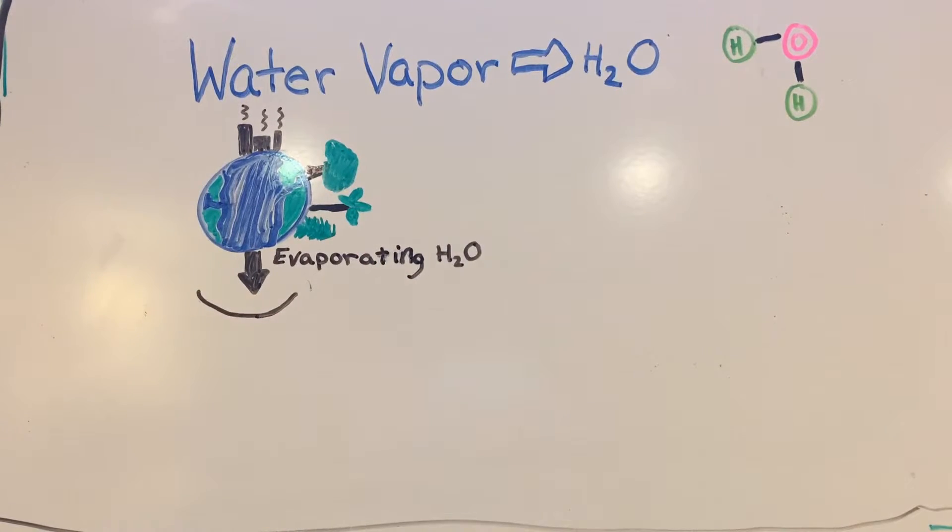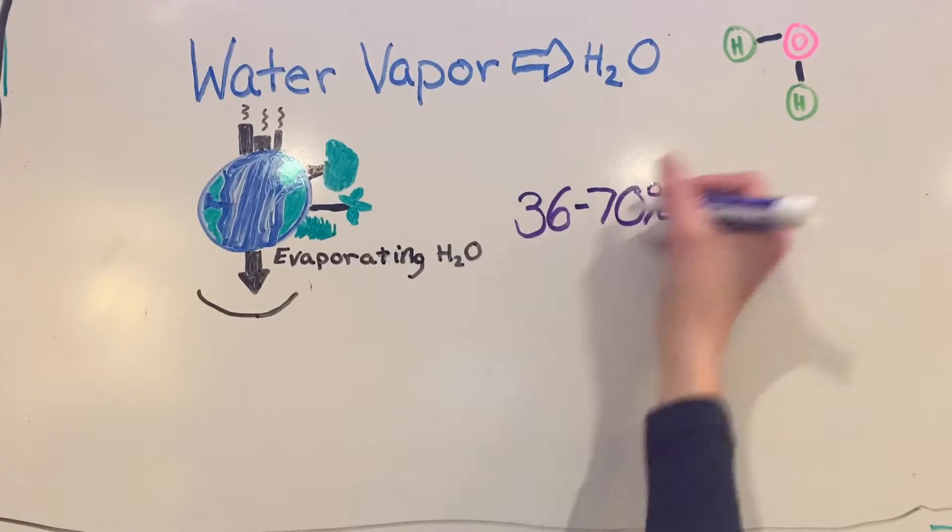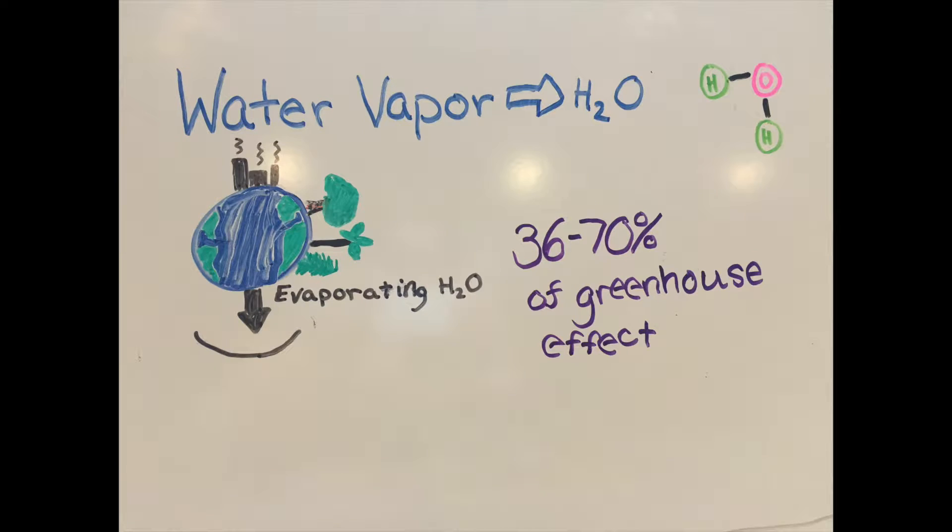As factories release greenhouse gases like carbon dioxide into the atmosphere, the Earth warms. This warming enables water vapor to evaporate and enter the atmosphere. This cycle is accelerated by deforestation, which decreases the planet's ability to control carbon dioxide levels. Water vapor contributes most to the greenhouse effect, averaging between 36 and 70%.